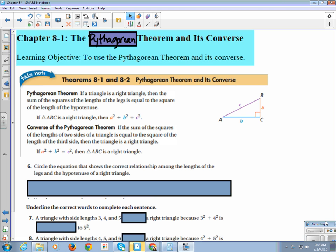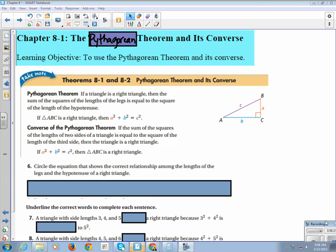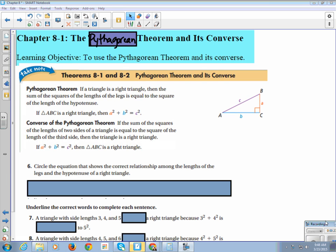Theorems 8.1 and 8.2 are Pythagorean Theorem and its converse. If you have a right triangle, it only works for right triangles. Then the sum of its squares of the legs is equal to the square of the length of the hypotenuse.